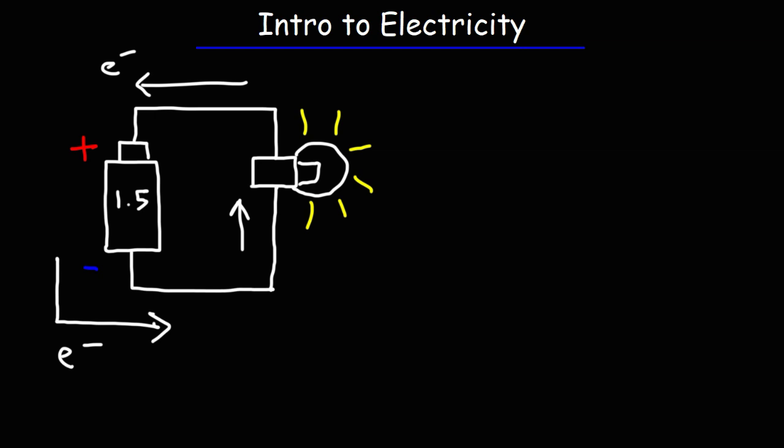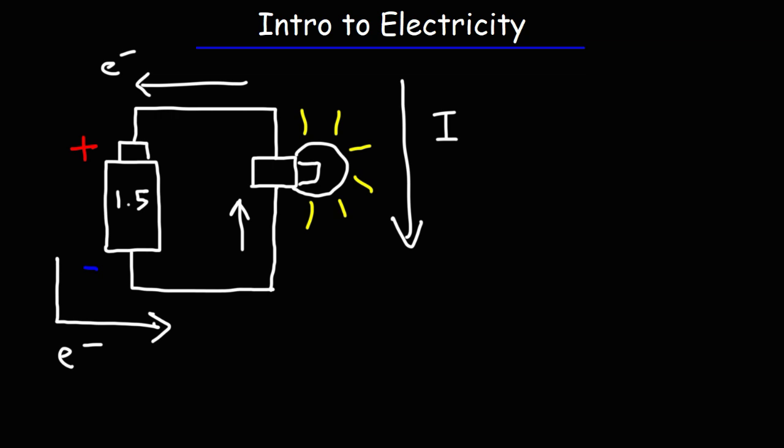In a circuit, the chemical energy stored in the battery is converted into electrical energy where the electrons are flowing, and that energy is converted into light energy. Even though electrons flow from the negative side to the positive side, many textbooks define current flow as being from the positive side to the negative side — from a position of high potential to low potential. Conventional current and the flow of actual electrons are in opposite directions.